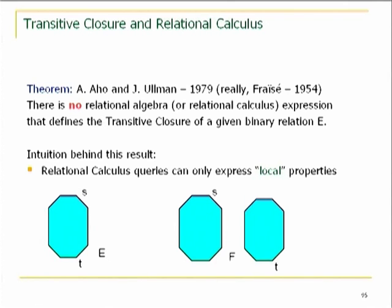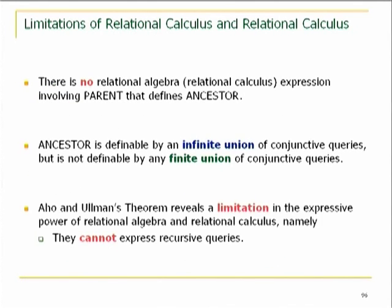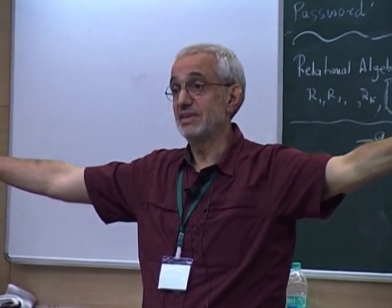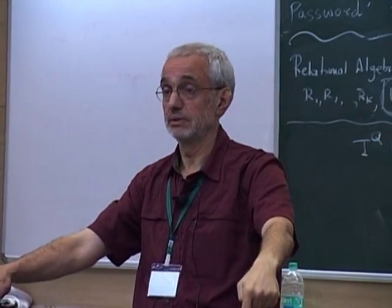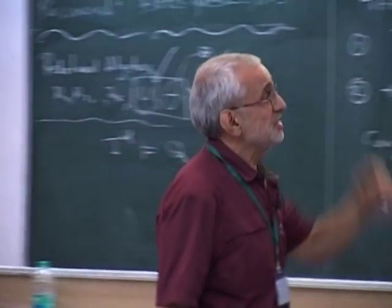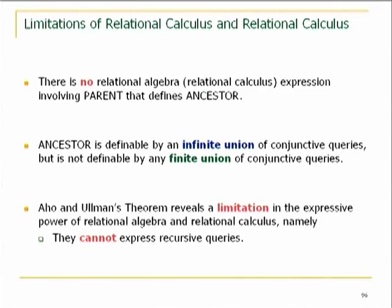In particular, if you have a database with information about parents, you cannot write an algebra or calculus expression that defines ancestor. If you think about paths in a graph or ancestor, this is an infinite union of conjunctive queries, but the result tells you it's not equivalent to any finite union. This really suggests a severe limitation in the expressive power of algebra and calculus.